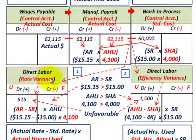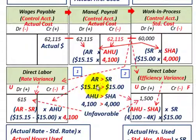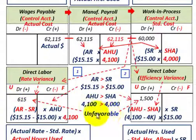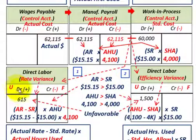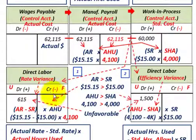That debit means it's an unfavorable labor rate variance, because our actual labor rate of $15.15 per hour is greater than our standard labor rate of $15.00 per hour — we had to pay more than our established standard cost. If the opposite were true and our actual labor rate was less than $15, the direct labor rate variance would be favorable and we would credit it.